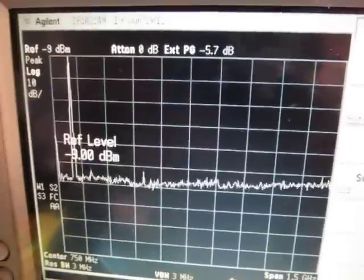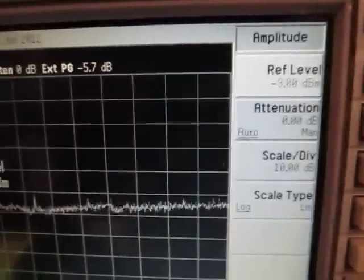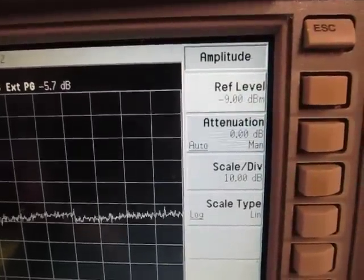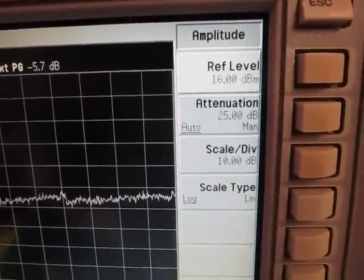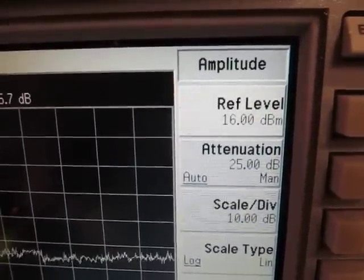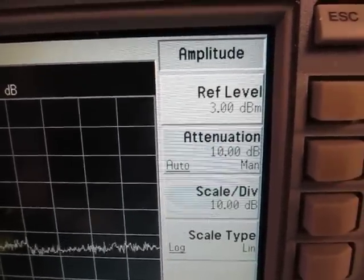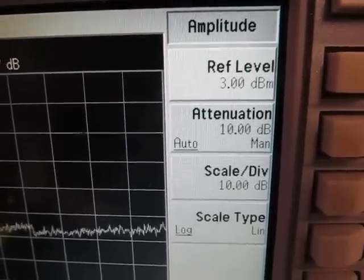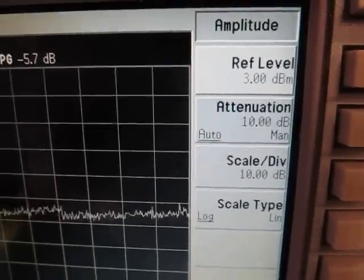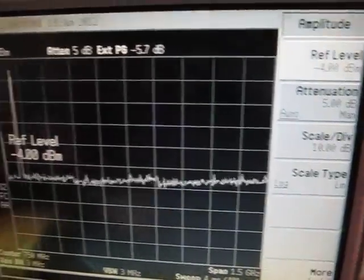So that's the first thing. And by leaving the attenuator in auto, what we'll see is that if I adjust the reference level up, for example, we'll see that at some point that attenuation kind of clicks up. So you have a 16 dBm reference level, the attenuator is at 25 dB. I work my way down, so at a 3 dBm reference level, my attenuator is at 10 dB. And you let that thing adjust automatically.